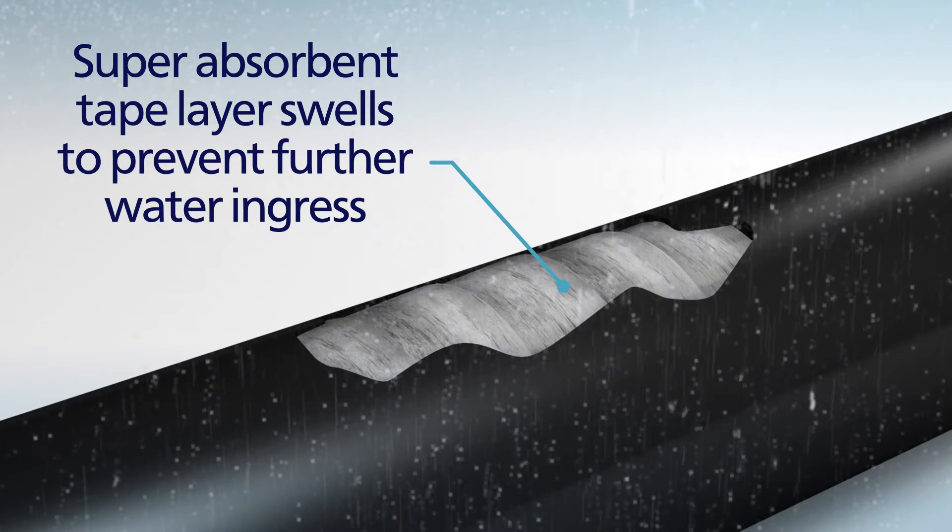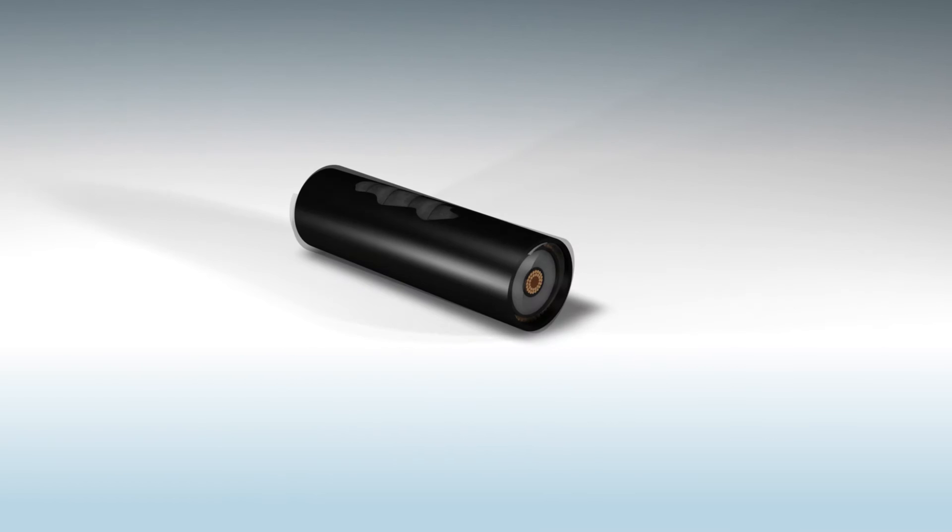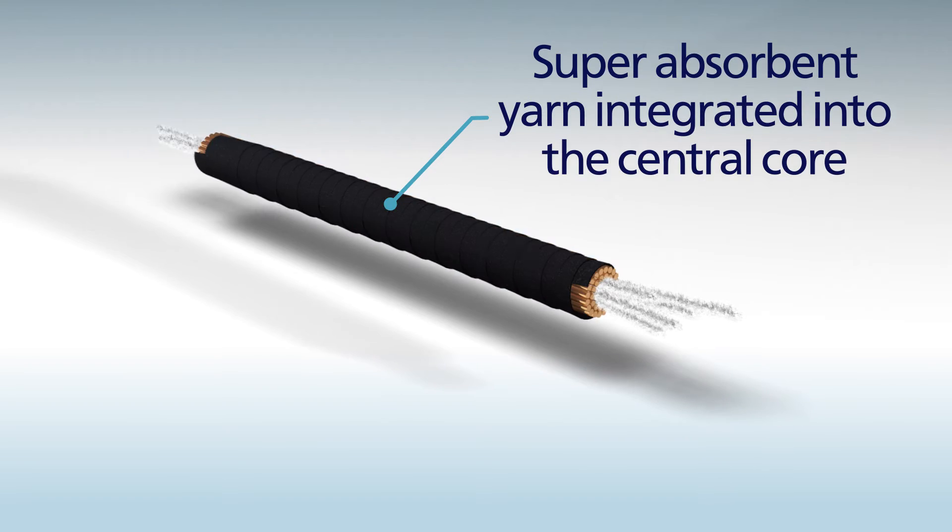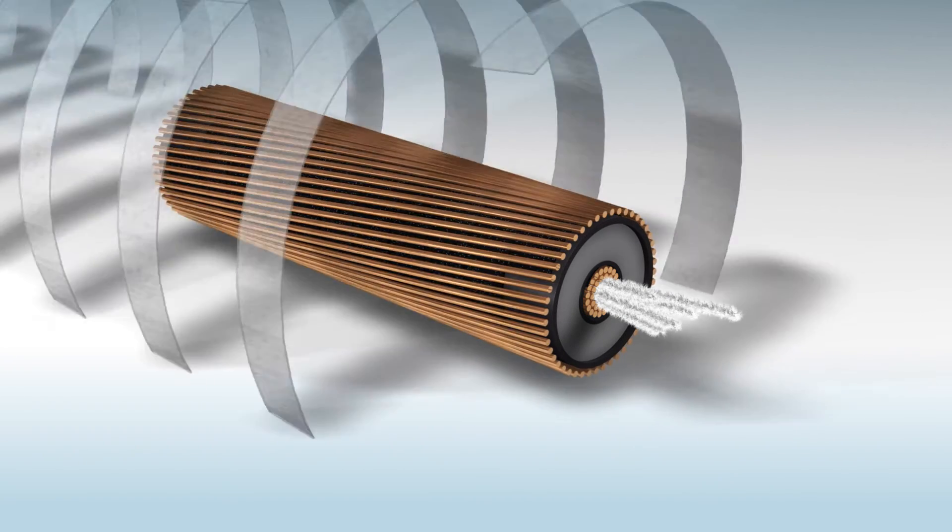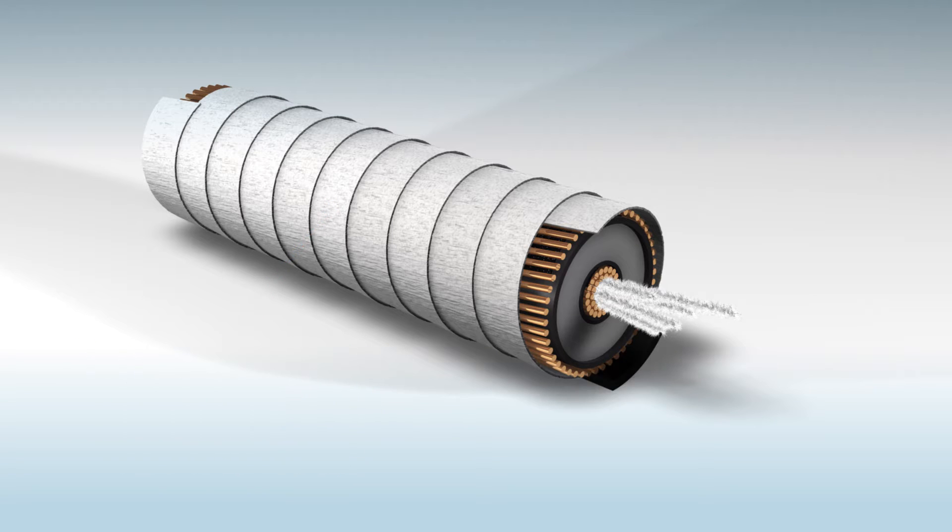Such highly effective protection is achieved by integrating SAF technology during the cable manufacturing process. Typically, the water blocking yarns are integrated into the cable's central core to give longitudinal water blocking performance, and water blocking tape is placed under the outer sheath for transverse water blocking protection.